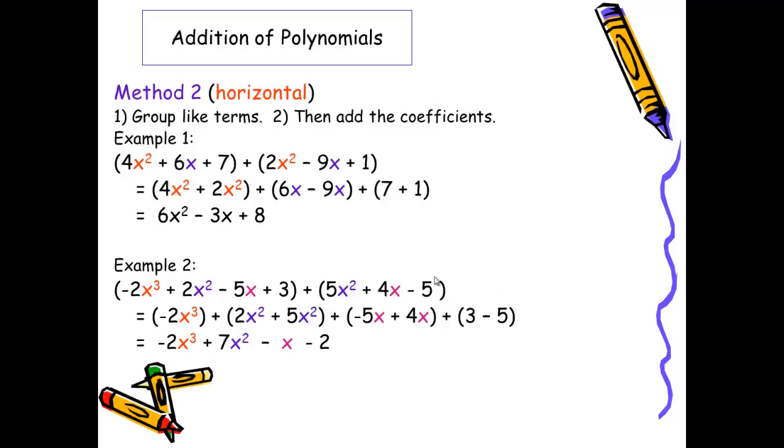The second method is called the horizontal method. In this case, we group the like terms. For example, we would group 4x² with 2x². We would then group 6x and -9x. And lastly, we would group the constants, 7 + 1. So now I have small groupings of like terms, and I add the coefficients. So once again, I get 6x² - 3x + 8.